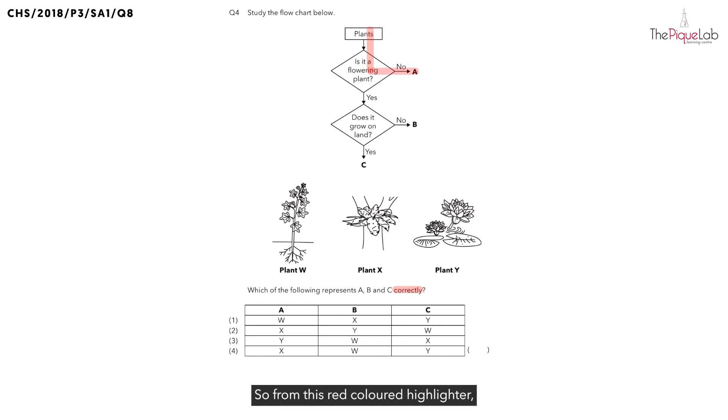From this red colored highlighter, what characteristic does A have? From the flowchart, we can see that A is not a flowering plant. So if it's not a flowering plant, we can write down at the side, A is a non-flowering plant. I will write it as NFP for short.